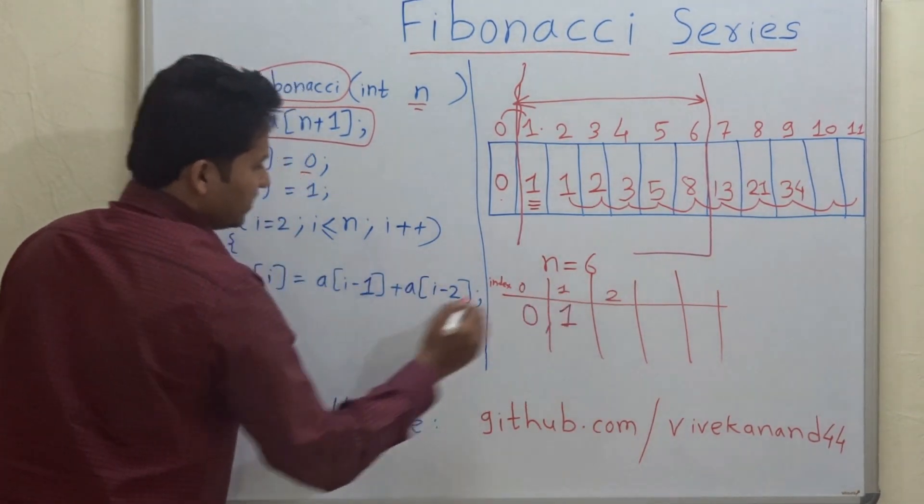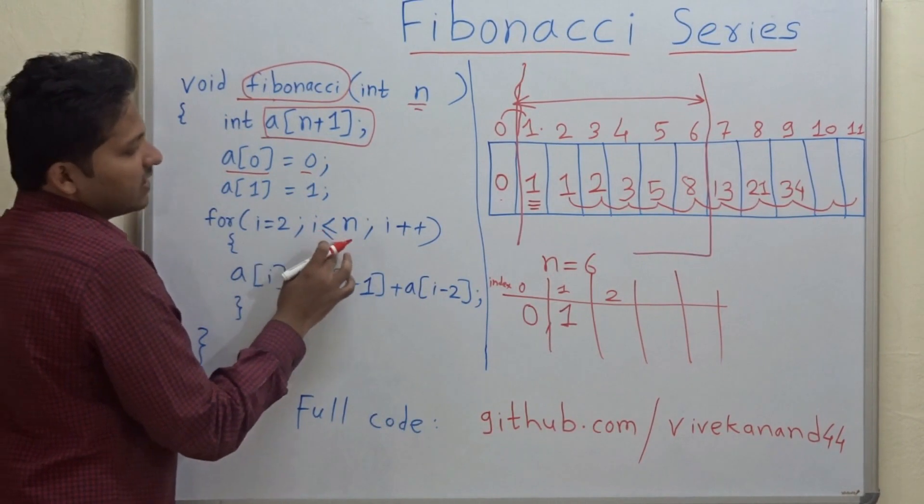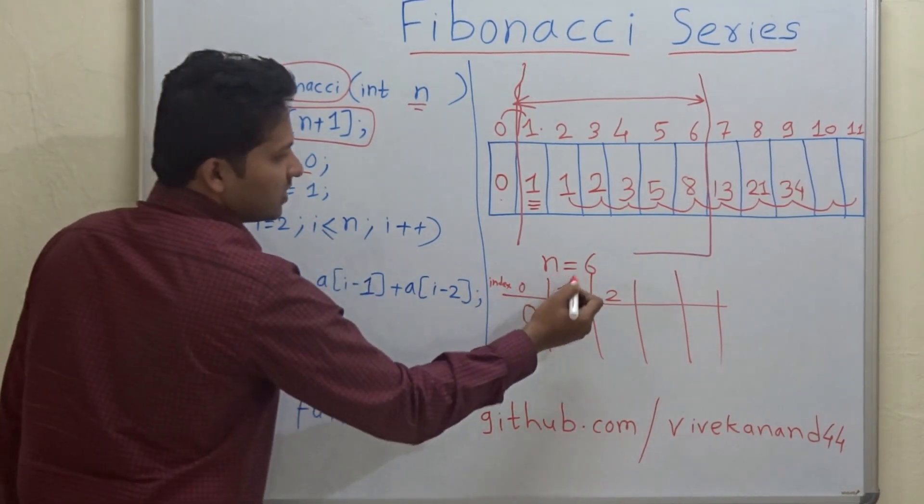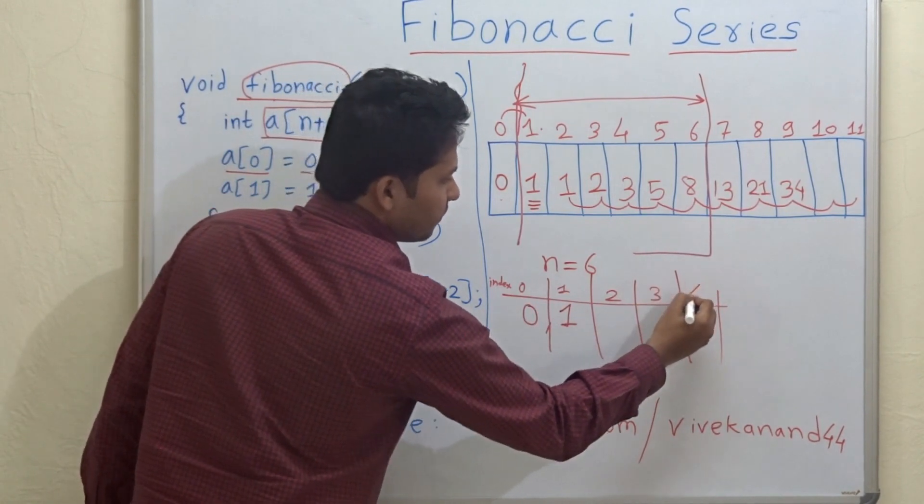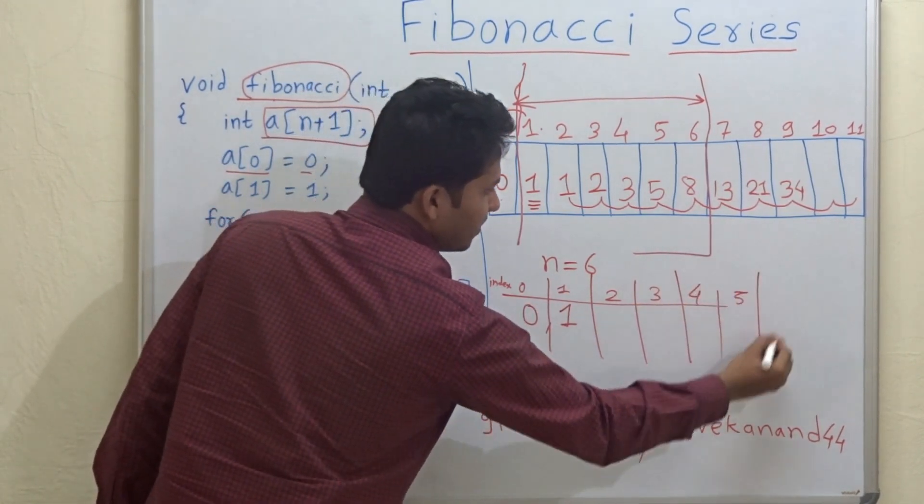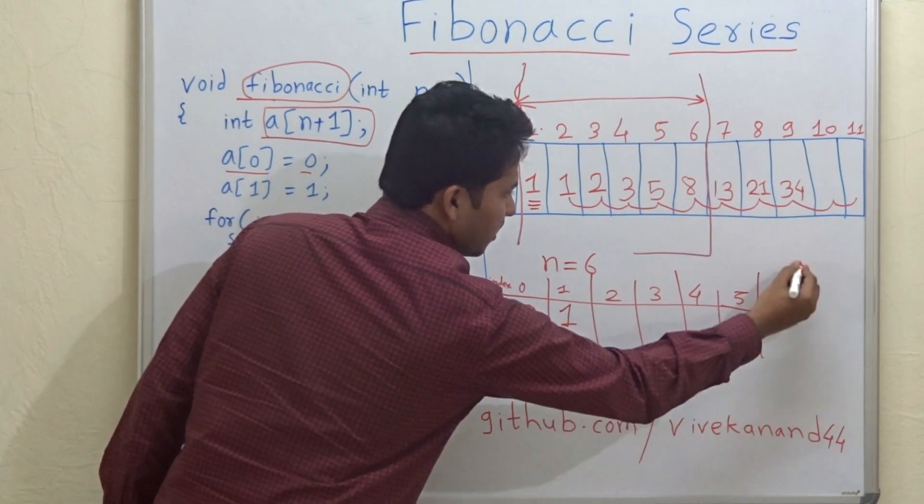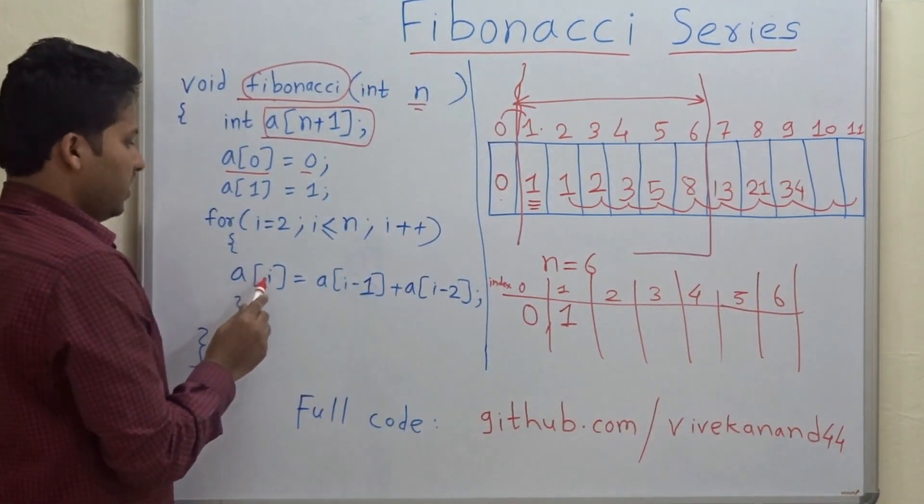And next, the for loop begins: for i equal to 2, so for the second index, and i is less than or equal to n. So if n is equal to 6, then indexes will be up to 3, 4, 5, and 6.